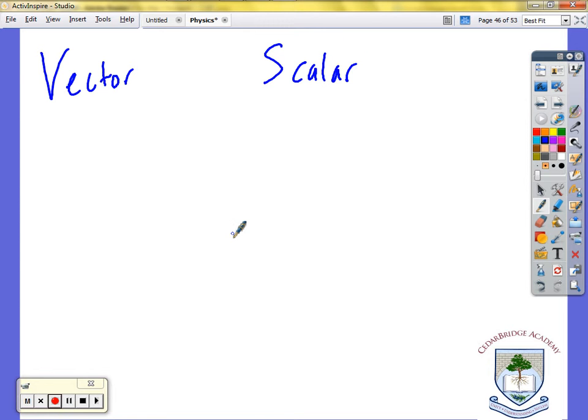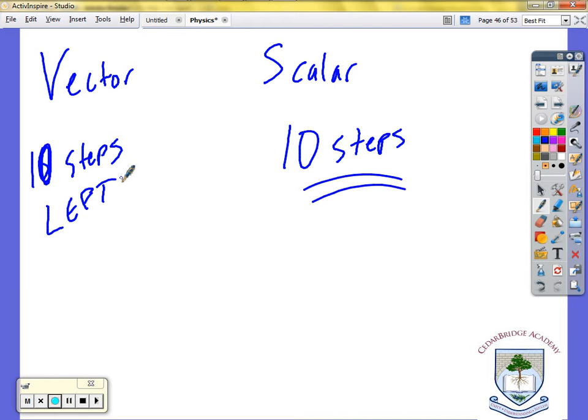Let's say I told you to take 10 steps. Me telling you to take 10 steps is a scalar quantity. If I tell you to take 10 steps left, the second I tell you left, it becomes a vector. Just like speed and velocity. Speed is scalar and velocity is a vector.